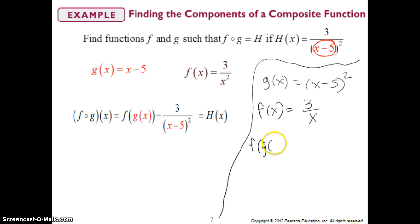To recreate f of g of x, or to recreate h of x, we would take g of x and plug it into the x in f of x, and we get 3 over x minus 5 squared, which is also just as correct. So that is also h of x.